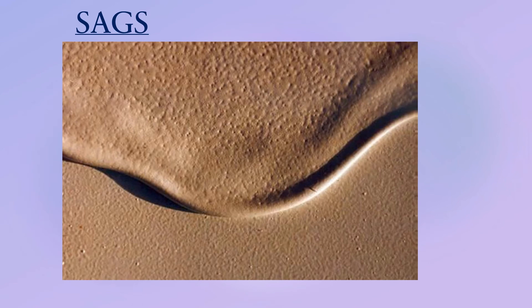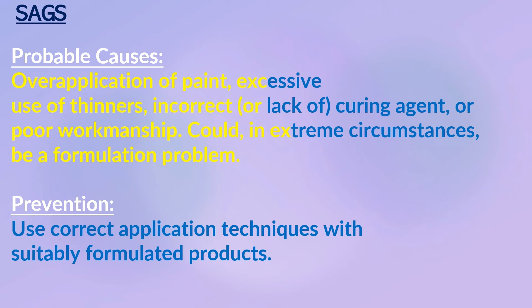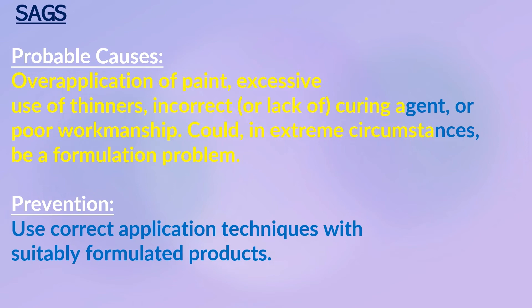Sags are caused by the downward movement of a coat of paint that appears soon after application and before setting, resulting in an uneven area with a thicker lower edge. They usually appear on local areas of a vertical surface and in severe situations may be described as curtains. Probable causes: over-application of paint, excessive use of thinners, incorrect curing agent, poor workmanship, or in extreme circumstances a formulation problem. Prevention: use correct application technique with suitably formulated product.